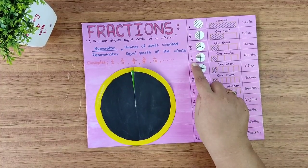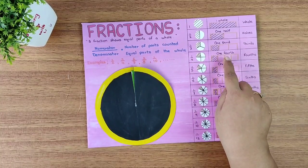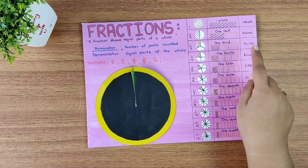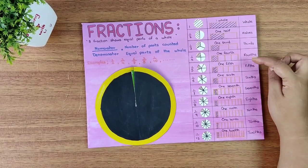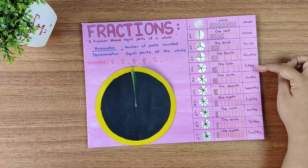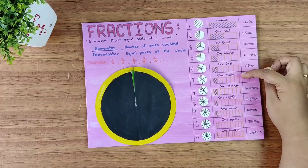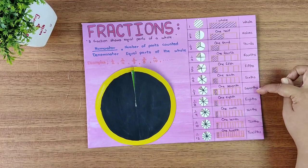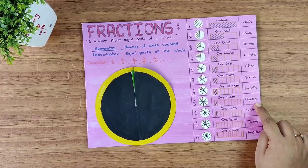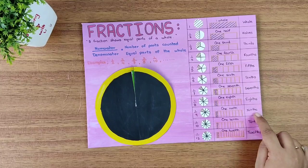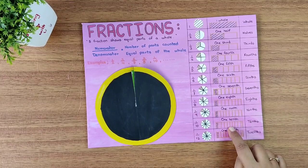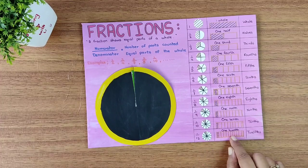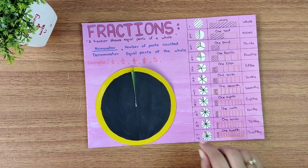In the same way, one fourth can be shown — the plural is fourths, you can also write quarter. Then one fifth, the plural is fifths. One sixth, the plural is sixths. One seventh, the plural is sevenths. One eighth, the plural is eighths. One ninth becomes ninths. One tenth, the plural is tenths. And one twelfth, where the plural is twelfths.